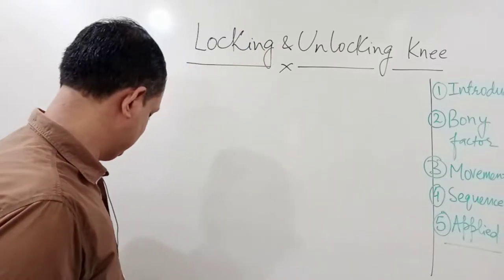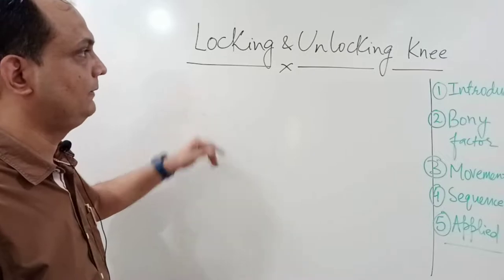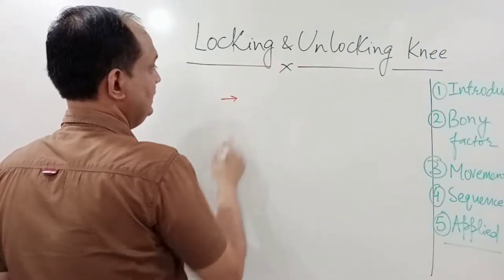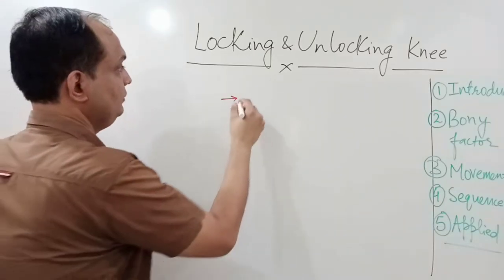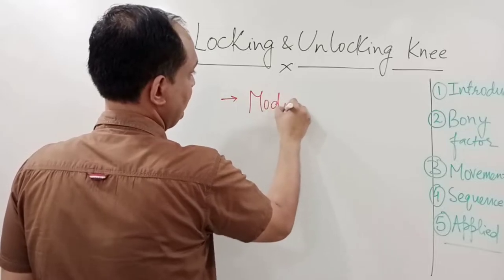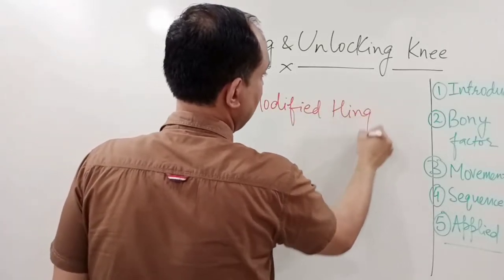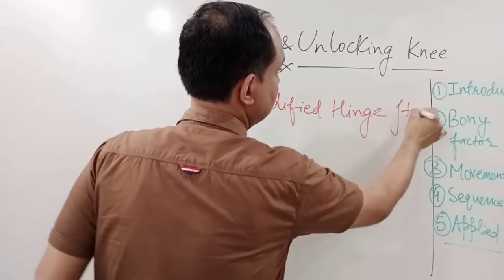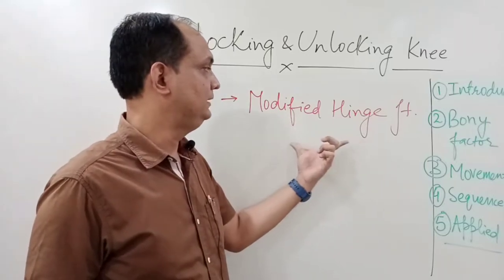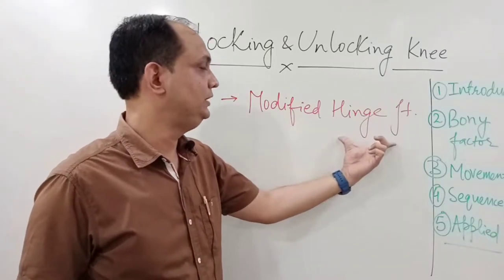So when you are in the exam question, you have to make these five subheadings: starting from introduction, factors responsible for locking and unlocking, what are the movements, sequence of the movement, and applied aspects. First is the introduction about the knee joint locking and unlocking. The knee joint is not a simple variety of hinge joint — it is a modified hinge joint.